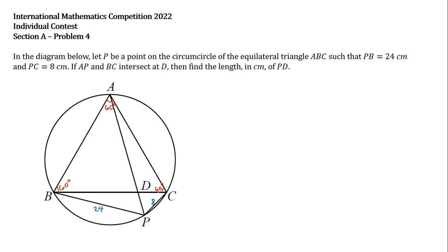Notice also that angle APB and angle ACB intercept the same arc AB, and so since angle ACB is 60 degrees, APB must also be 60 degrees.